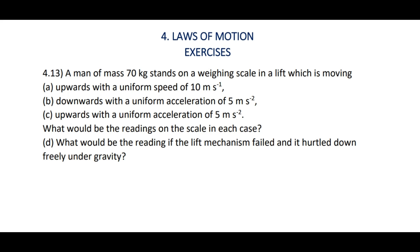In this video we are going to discuss problems 4.13 and 4.14 from the laws of motion. A man of mass 70 kg stands on a weighing scale in a lift which is moving upwards with a uniform speed of 10 m/s, downwards with a uniform acceleration of 5 m/s², upwards with a uniform acceleration of 5 m/s². What would be the readings on the scale in each case, and what would be the reading if the lift mechanism failed and it hurtled down freely under gravity?